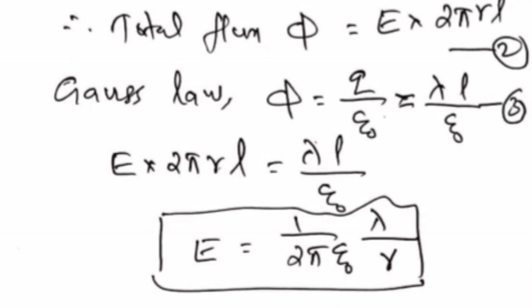Φ equals integral E dot ds equals E integral ds equals E into 2πRL. Total flux equals E into 2πRL. By Gauss's law, q by ε₀ equals λL by ε₀. Third equation: E into 2πRL equals λL by ε₀. Therefore E equals 1 by 2πε₀ λ by R.